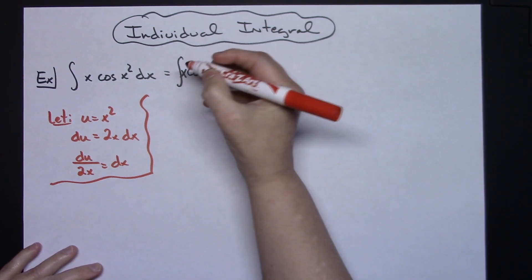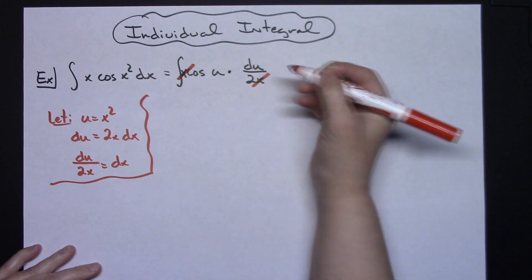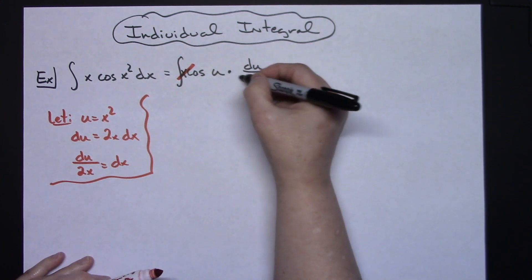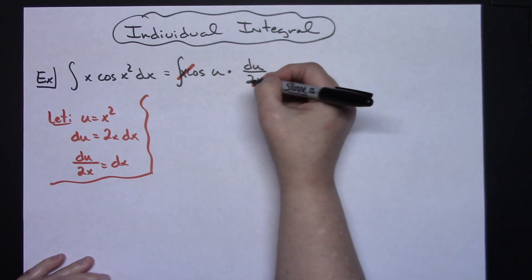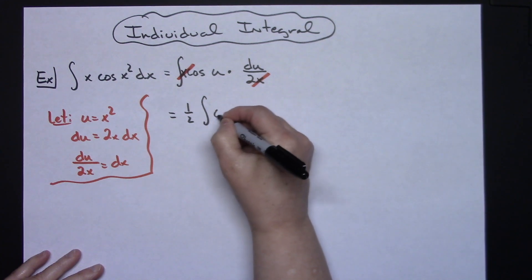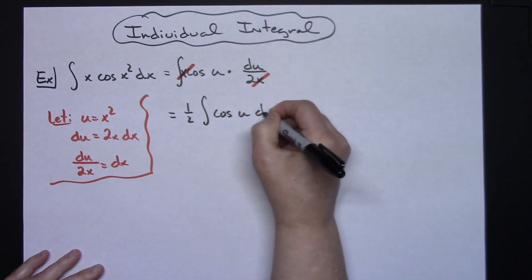Now what you can see from here then is those x's are going to cross out which is what we want to happen. I still have this 2 here so I've got really basically a 1 half that I can pull out in front of my integral. So I'm going to have a 1 half integral cosine u du.